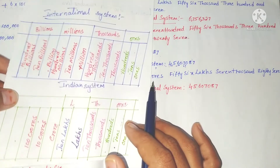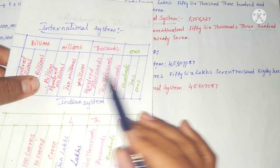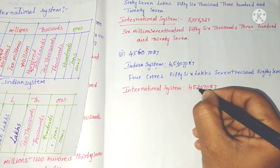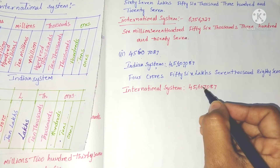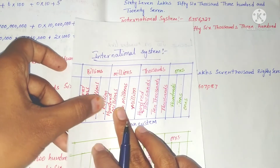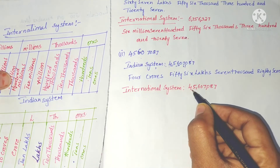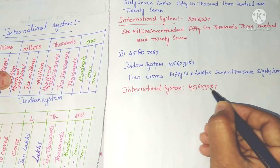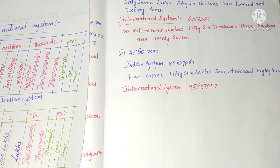In the international system, we place commas after every three digits. Here there are three slots in millions. So the international system number is: 45,006,007,087.